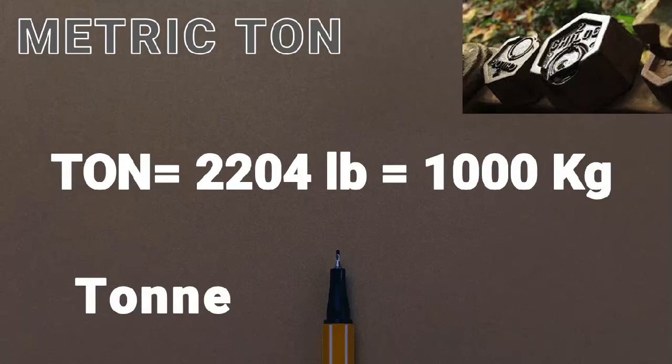There is a third tonne — similar pronunciation but spelled T-O-N-N-E — which is precisely 1000 kg or 2204 pounds. This term is used worldwide and is defined in the International System of Units.